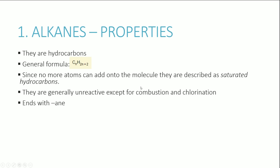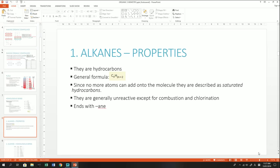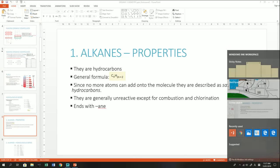Alkanes have the general formula CₙH₂ₙ₊₂, which you need to memorize. Because they only have carbon-carbon single bonds, no more atoms can add onto the molecule, so they are described as saturated hydrocarbons. An important rule in organic chemistry: each carbon can hold a maximum of four bonds in total — no more, no less.